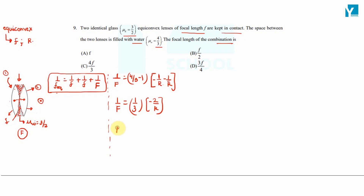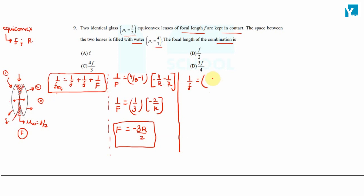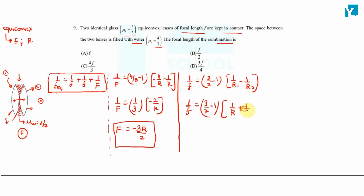Now we find the value of R. For the given glass convex lens with focal length f: 1/f = (μ_glass - 1)(1/R1 - 1/R2) = (3/2 - 1)(1/R - (-1/R)) = (1/2)(2/R). This gives 1/f = 1/R, so R = f. Therefore, small f equals capital R.